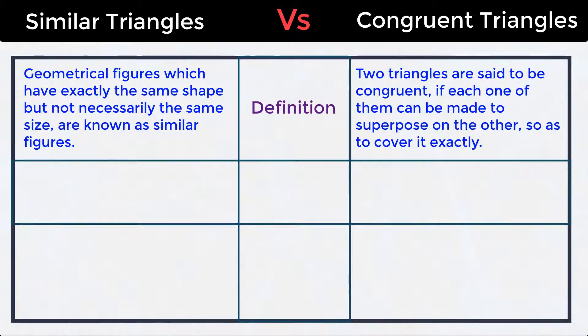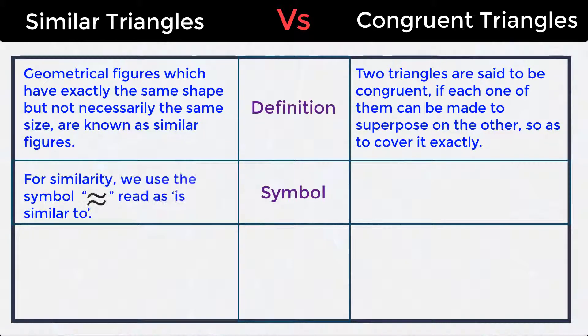Definition of congruent triangles: two triangles are said to be congruent if each one of them can be made to superpose on the other so as to cover it exactly. Symbol for similar triangles.